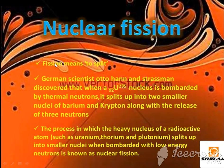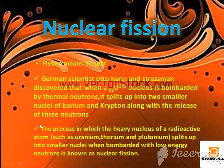German scientists Otto Hahn and Strassman discovered that when a uranium nucleus is bombarded by thermal neutrons, it splits up into two smaller nuclei of barium and krypton, along with the release of three neutrons. The process in which the heavy nucleus of a radioactive element such as uranium, thorium, or plutonium splits up into smaller nuclei when bombarded with low energy neutrons is called nuclear fission.